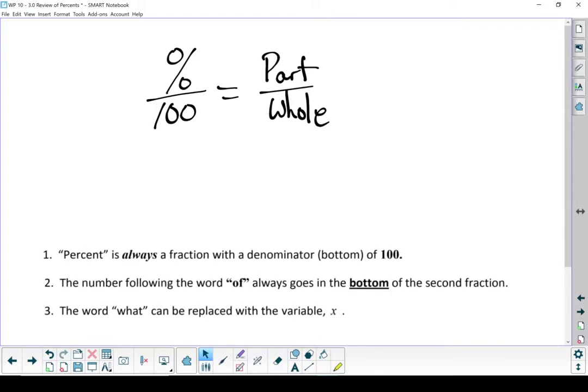A couple of little tips. A percent is always a fraction with a denominator, with a bottom of 100. The number following the word 'of' always goes on the bottom of the second fraction. That is your whole. And the word 'what' in the sentence can be replaced with the variable x. Let's go through a couple of examples.